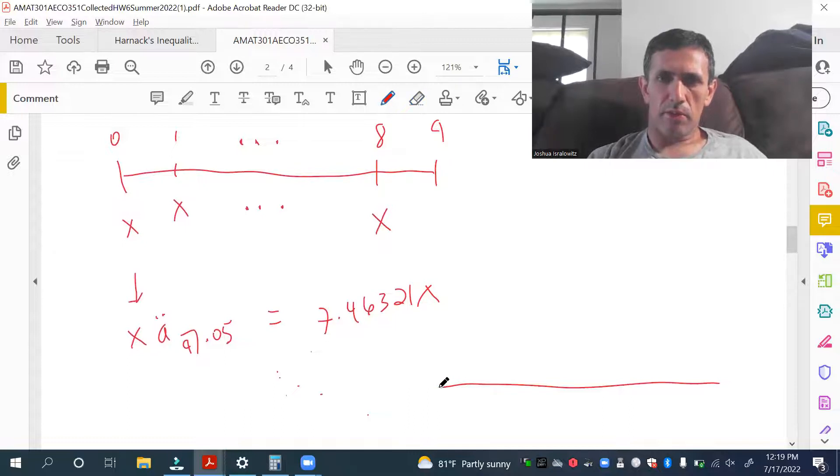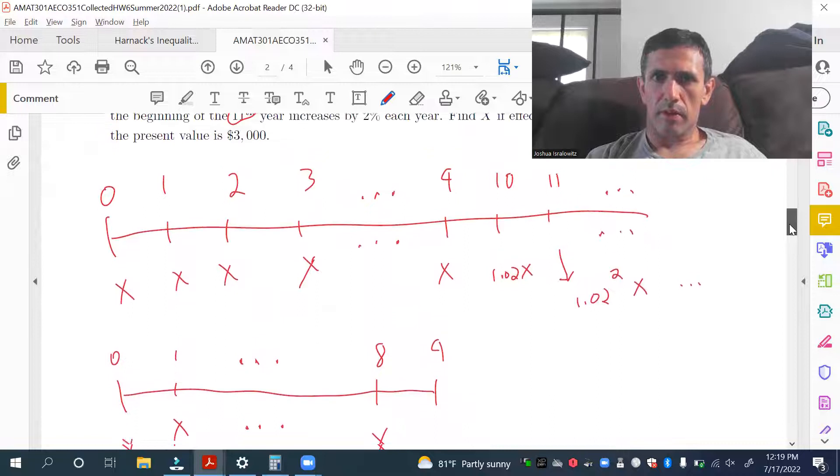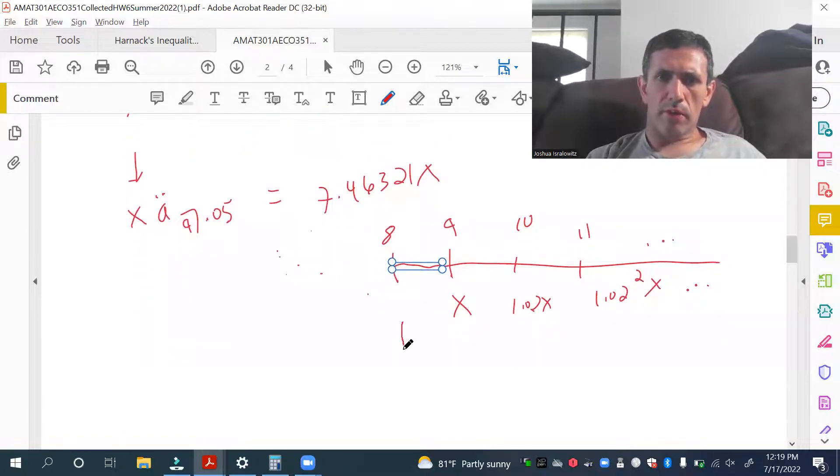So, the first year is the 9th year, 8 to 9. We already took care of this payment here. So, this starts at x. I think this makes it a little easier anyway. So, this is 8, 9, 10, 11. So, this is 1.02x, 1.02 squared x, et cetera. So, now we use our formula.